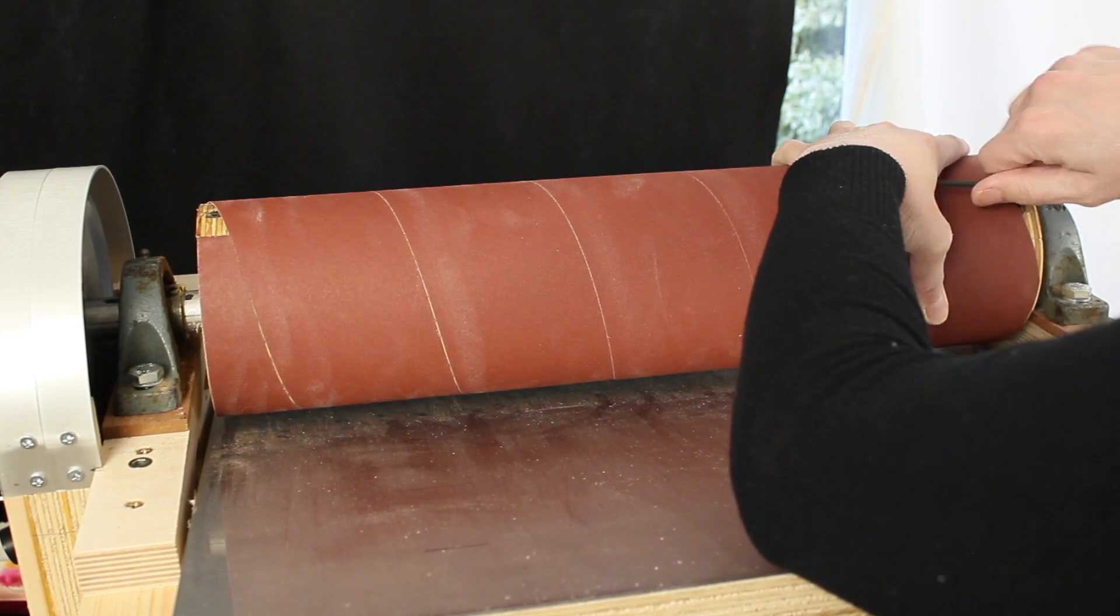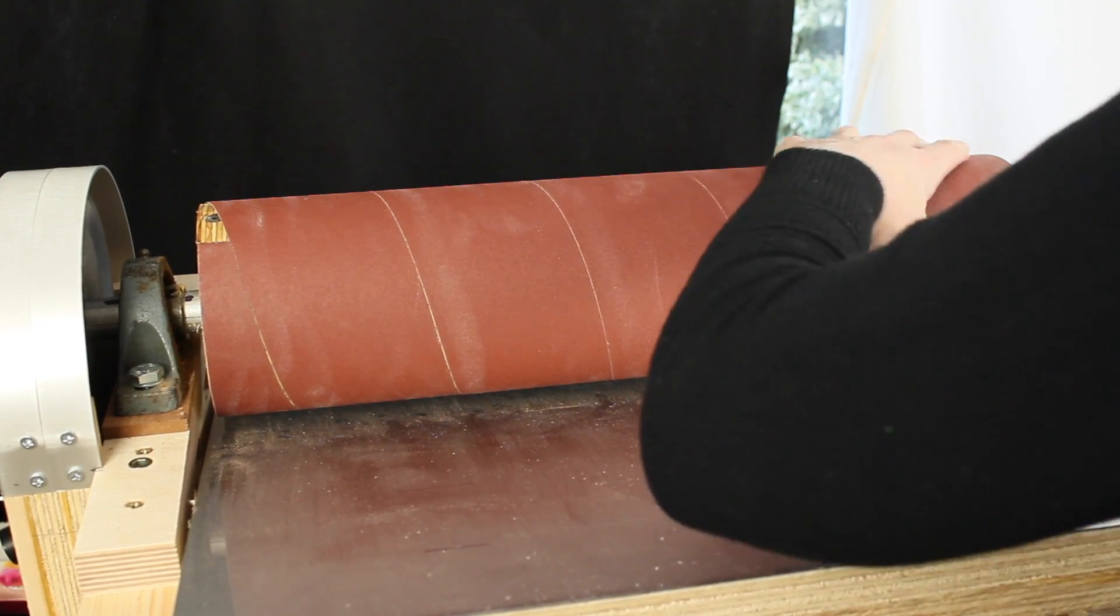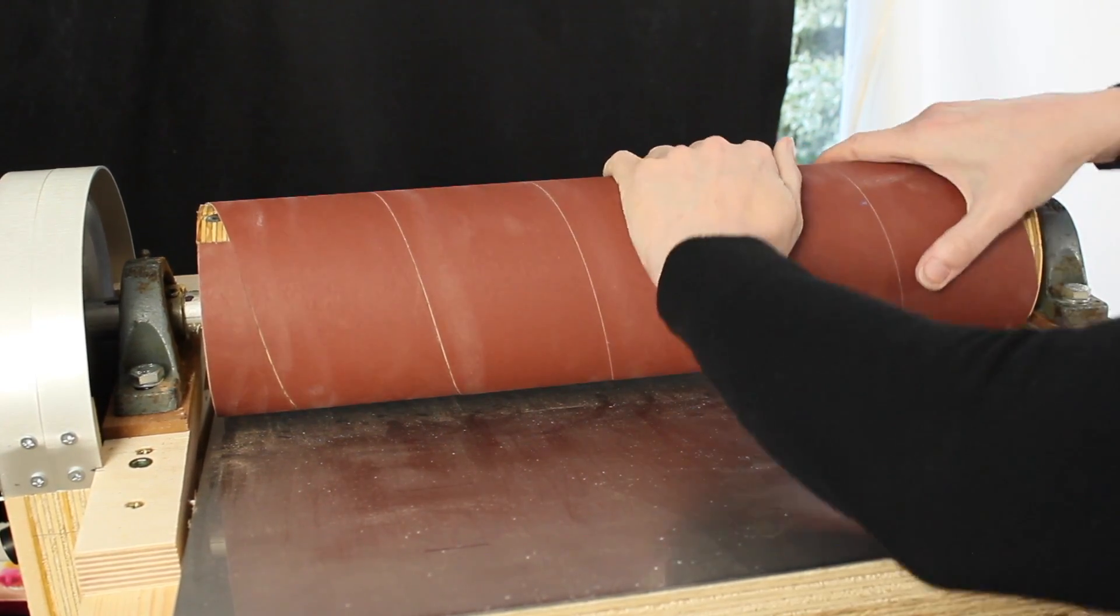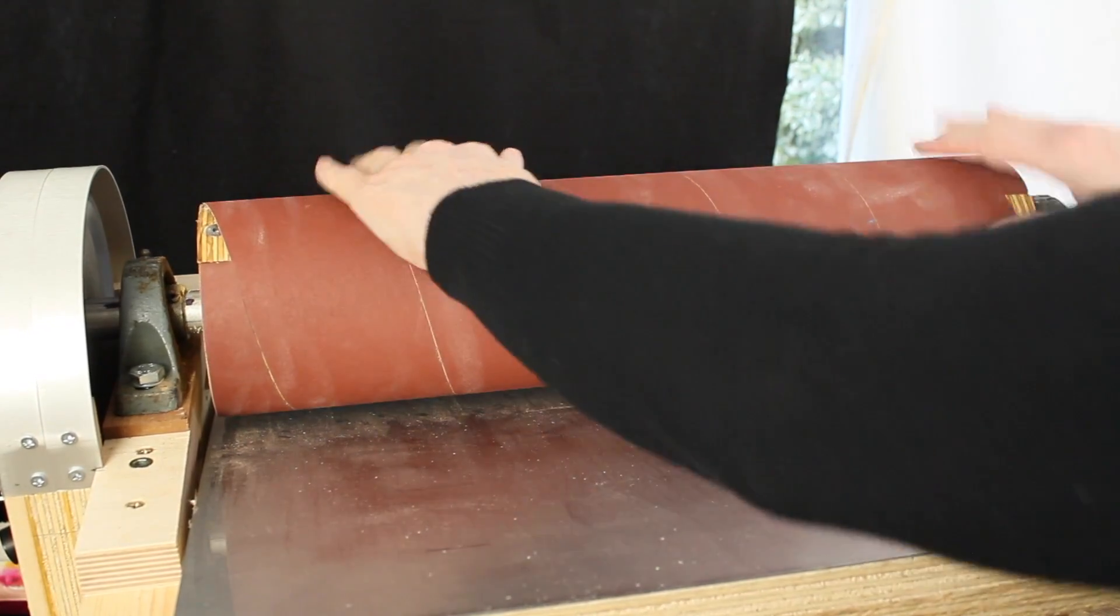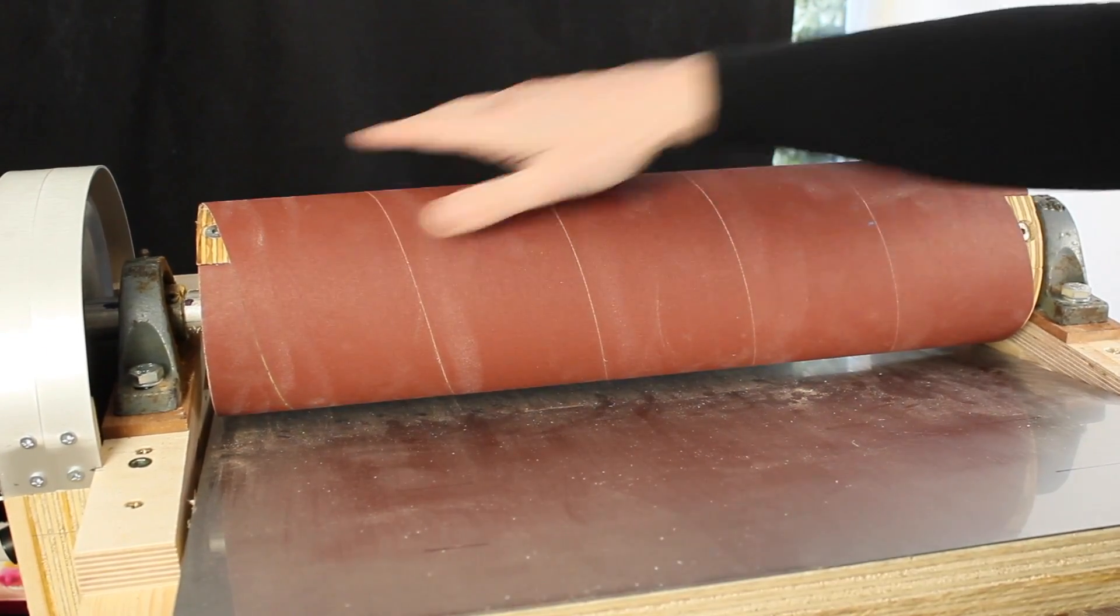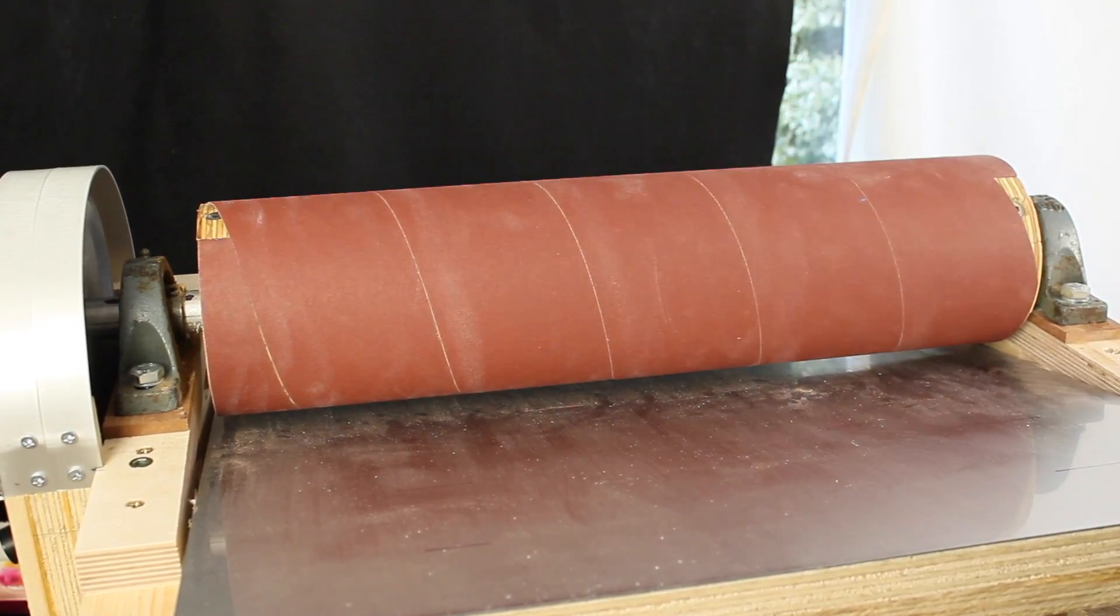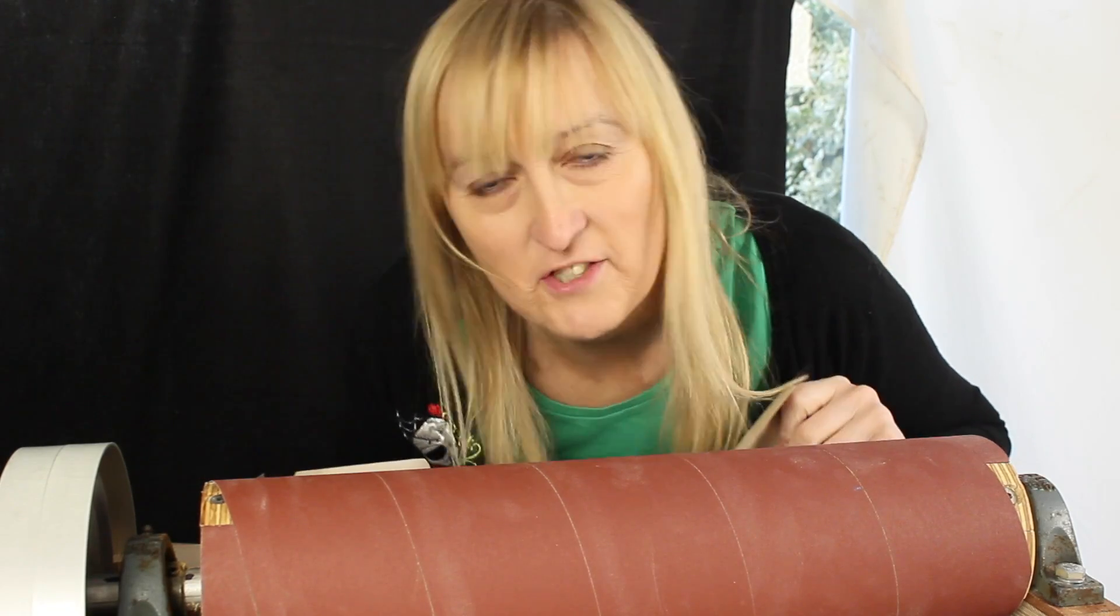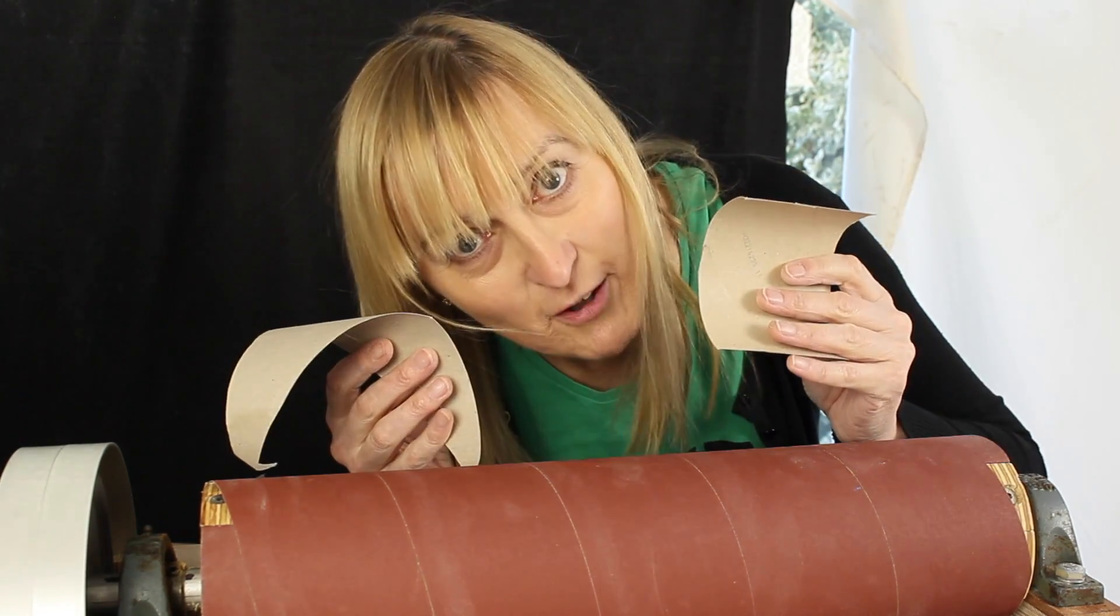Right that seems quite tight so we'll leave it there. You will see this in use in a future video. And that is how you change the sandpaper on a drum sander with mathematics and toilet rolls.